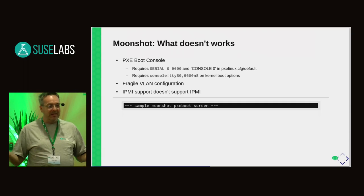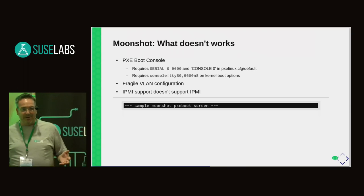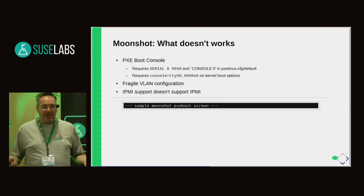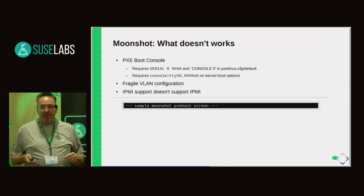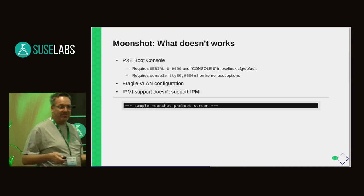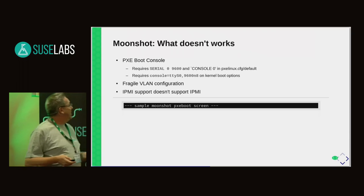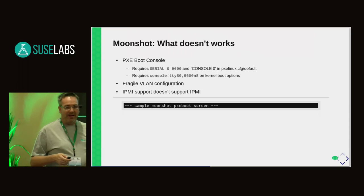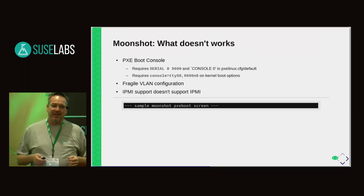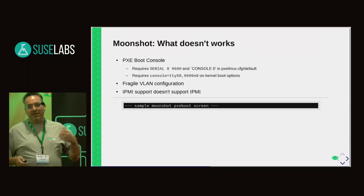The worst thing about the Moonshot system is PXE boot. If you don't get the PXE boot configuration right, your nodes look horrible. The serial speed is at 9600, which means most setups that default to 115200 just simply break — nothing shows up. It says that it supports IPMI, but there were features missing and features that didn't do the right thing, so IPMI simply isn't a thing. That's all I'm going to say about Moonshot — the rest is just about Werewolf.